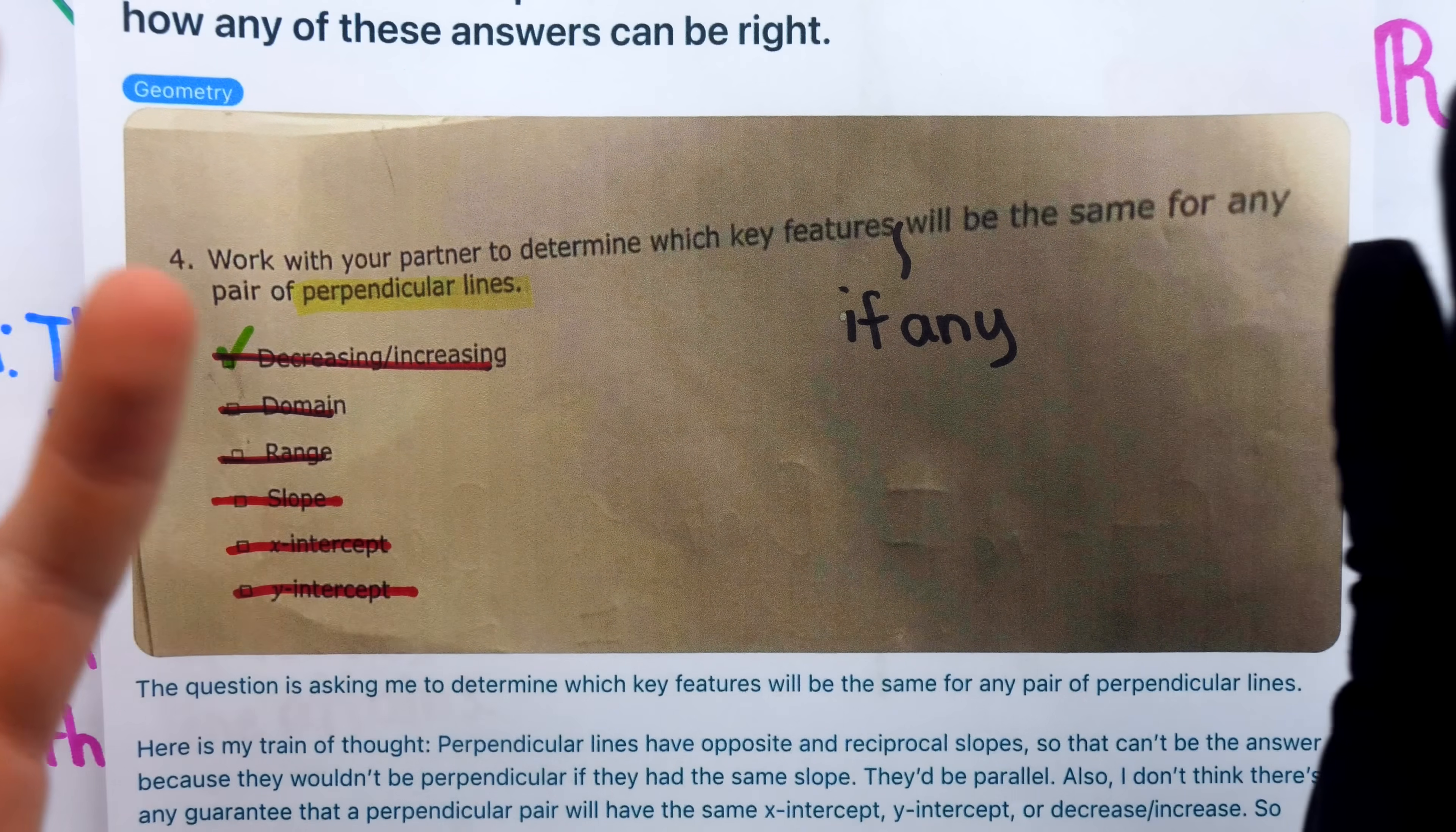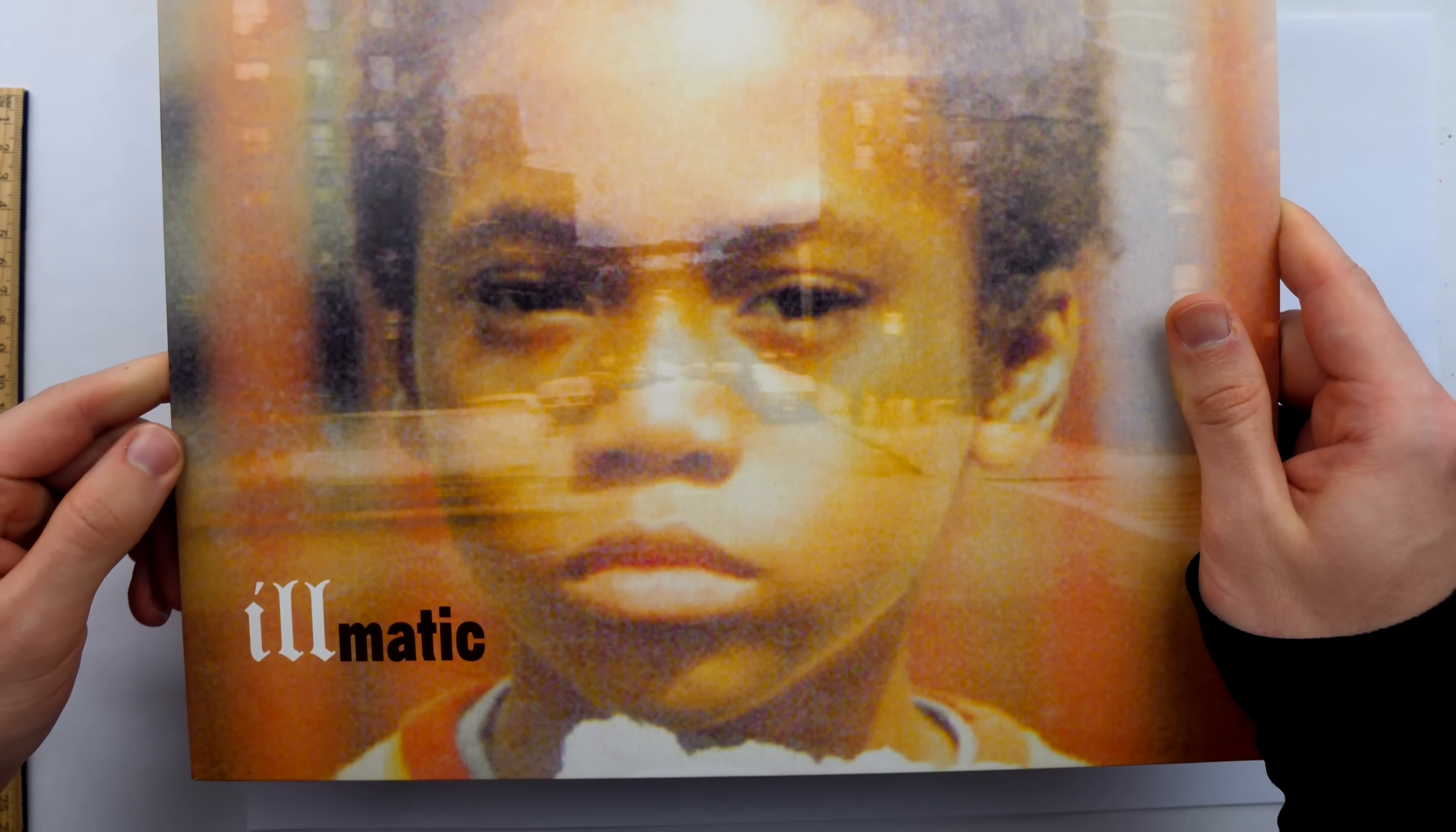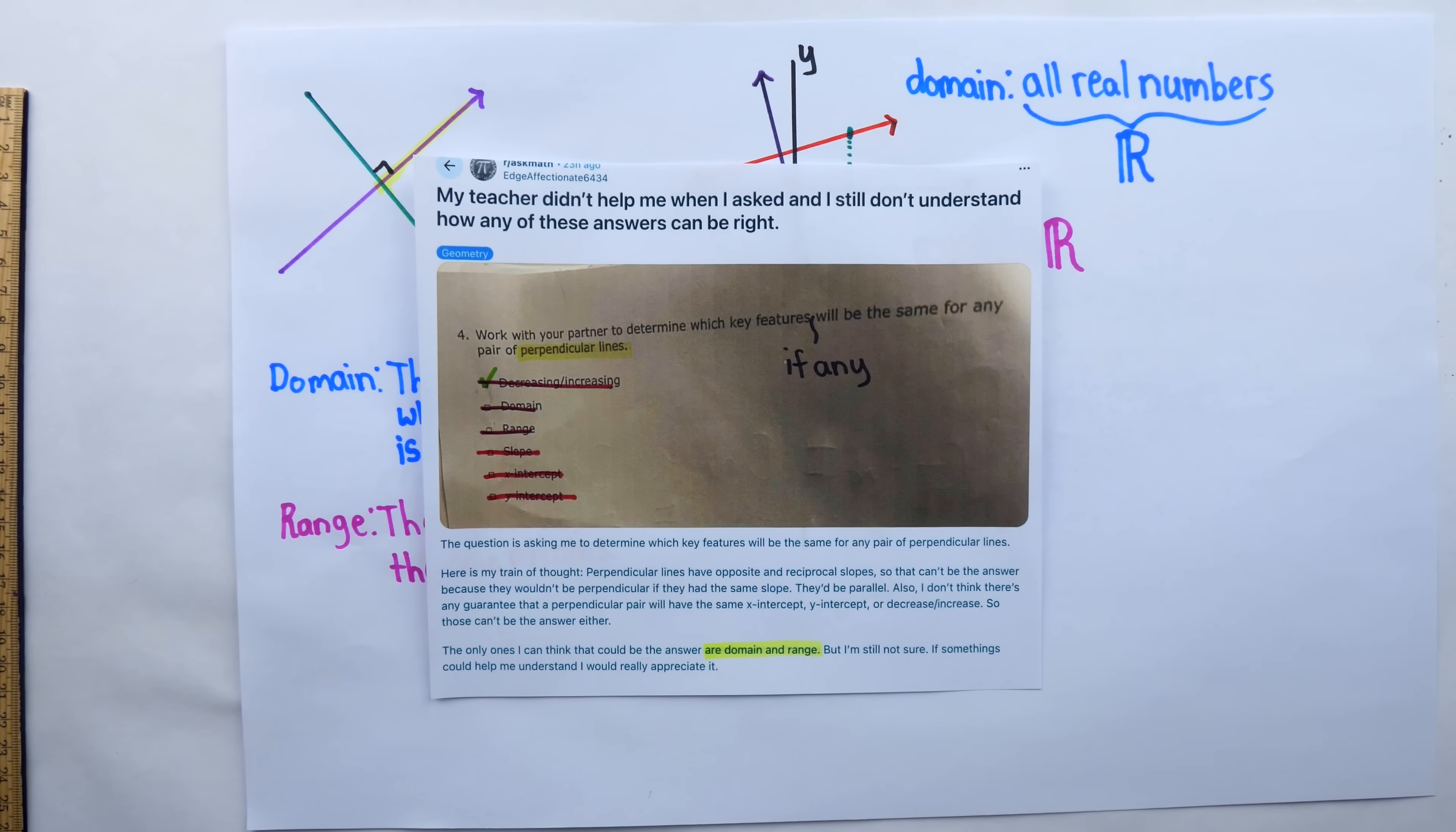So if you ask me, there's nothing wrong with checking zero of them. After all, zero is a number just like any other. Even though it was invented to describe the number of skips on Nas's debut Illmatic, it's still just a number.